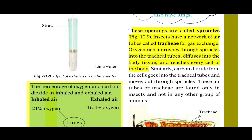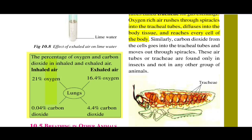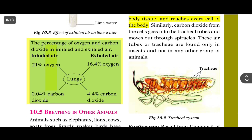Insects have a network of air tubes called trachea for gas exchange. Oxygen-rich air rushes through the spiracles into the tracheal tubes, diffuses into the body tissue, and reaches every cell of the body.